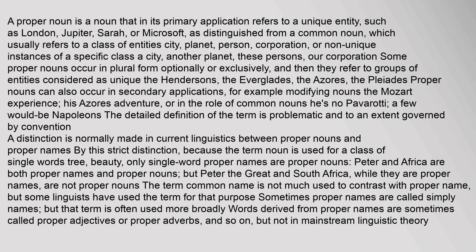Some proper nouns occur in plural form optionally or exclusively, and then they refer to groups of entities considered as unique: the Hendersons, the Everglades, the Azores, the Pleiades. Proper nouns can also occur in secondary applications, for example modifying nouns — the Mozart experience, his Azores adventure — or in the role of common nouns: he's no Pavarotti.